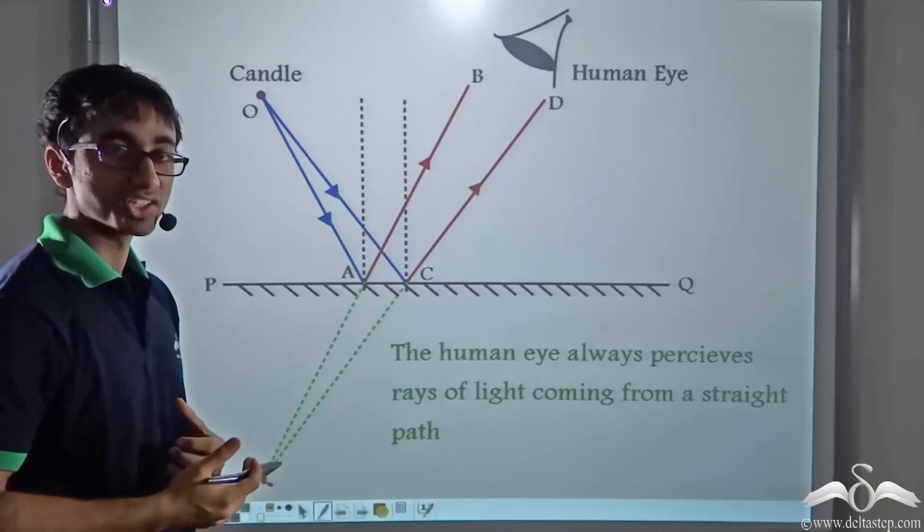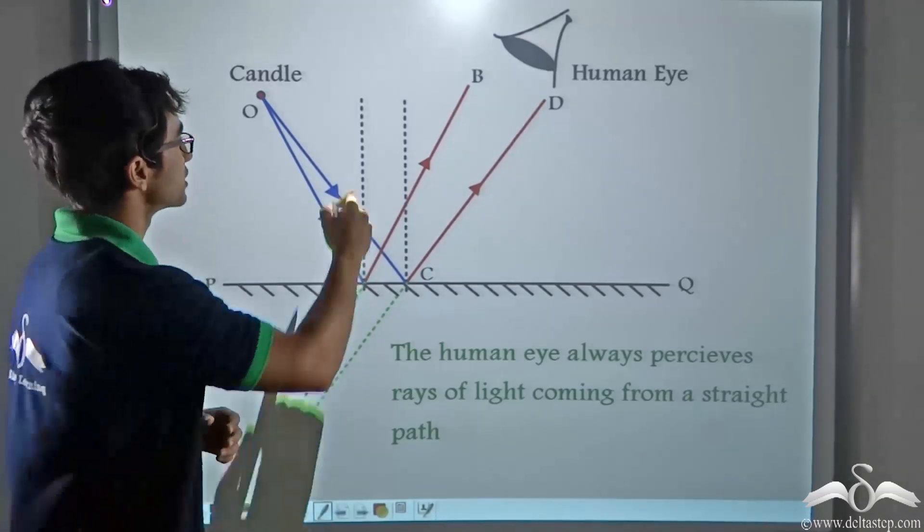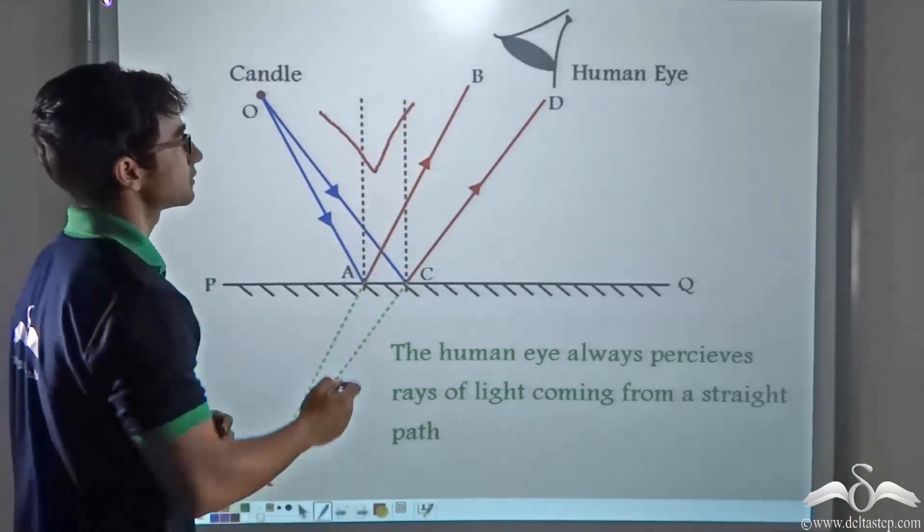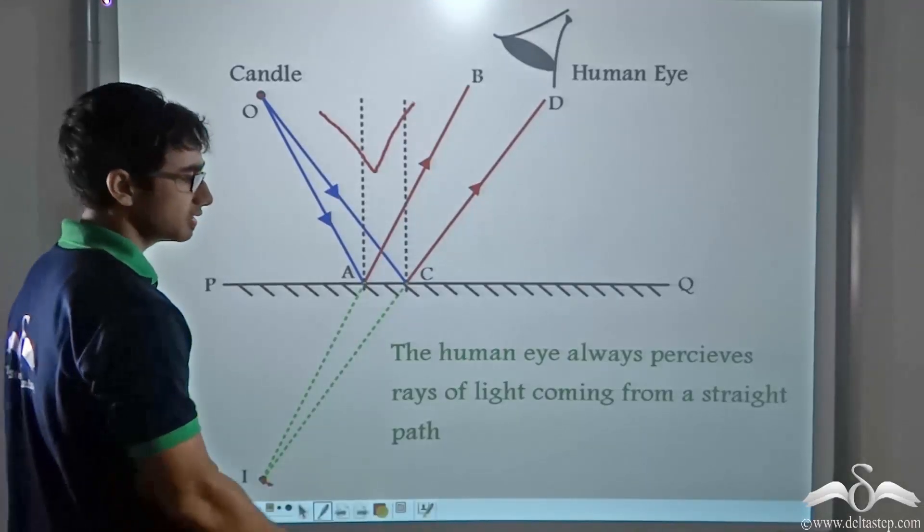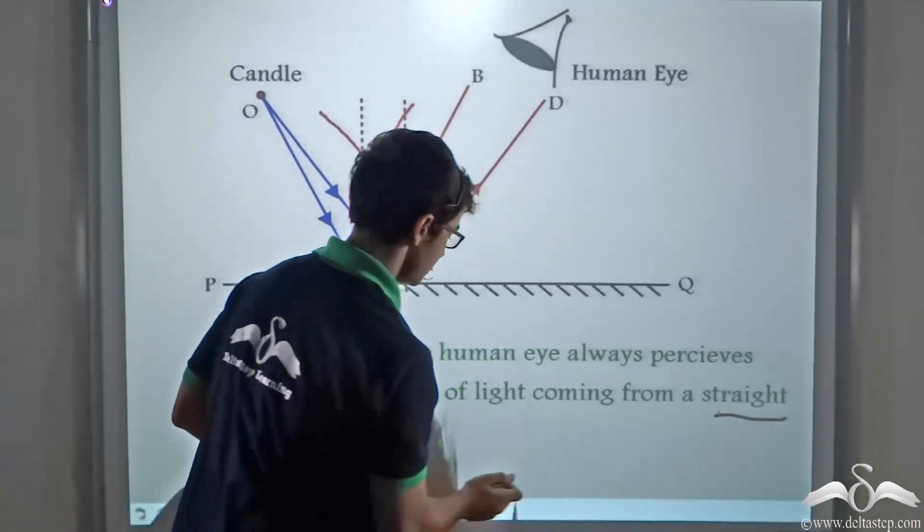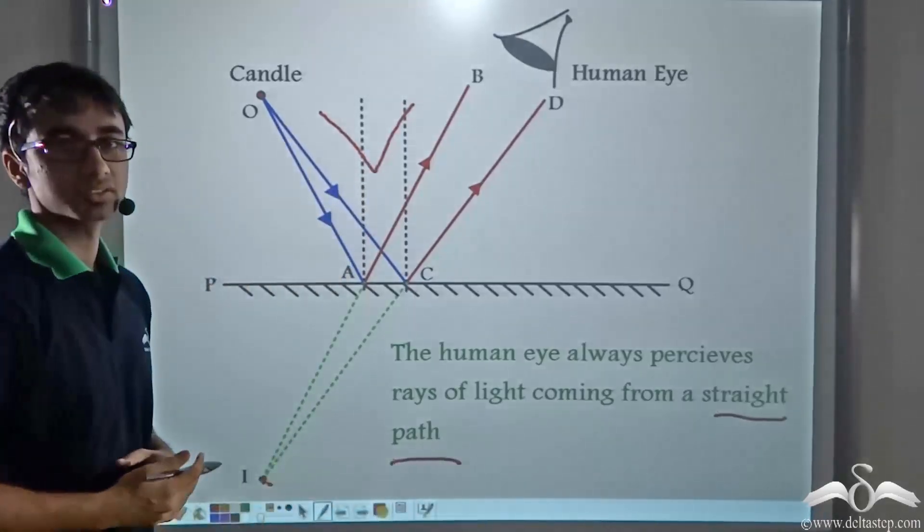Because like I mentioned, the human eye cannot perceive this V path. It always perceives that the image is coming in a straight line path.